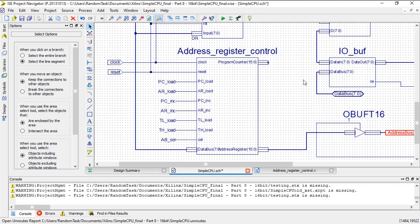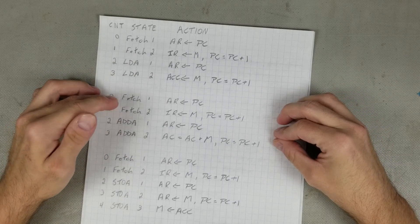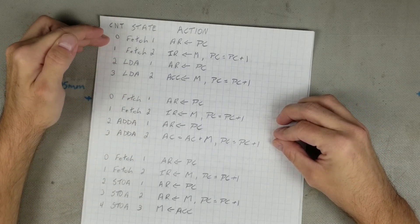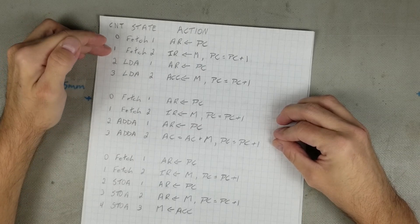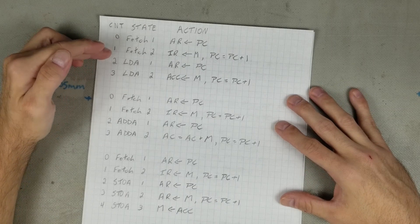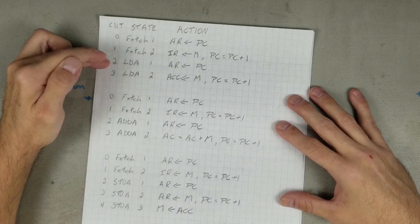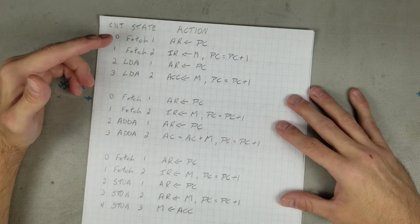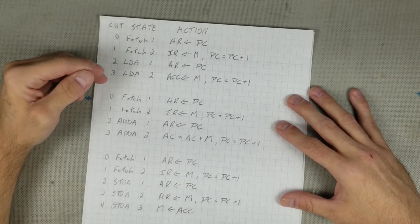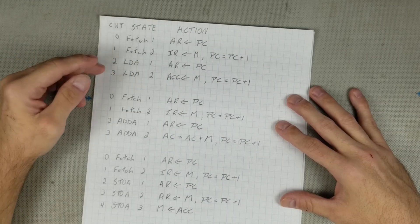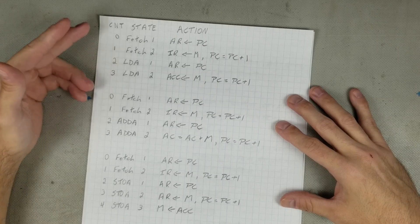With that done, the control block needs to be updated to use the new address block. The original state outline shows that fetch 1 loads the address register from the program counter. In fetch 2, it loads the instruction register from memory and increments the program counter. Then in the next state for all instructions, it again loads the address register with the program counter that was just incremented. If instead we also increment the address register at the same time as the program counter, we can remove state count 2 completely, which is why we added the address register increment control line.